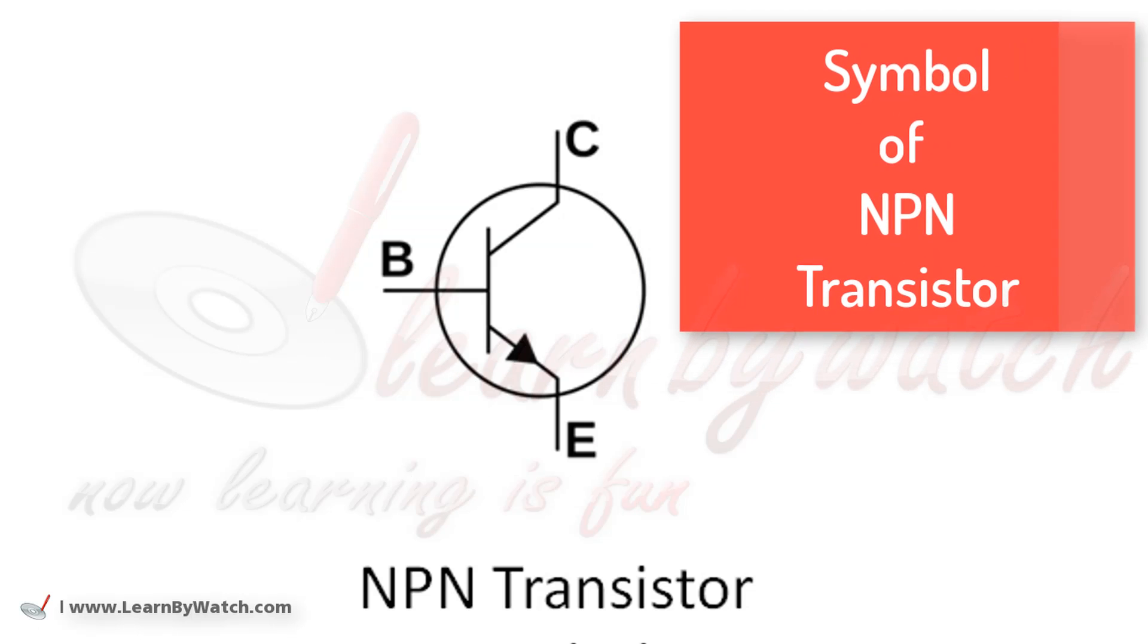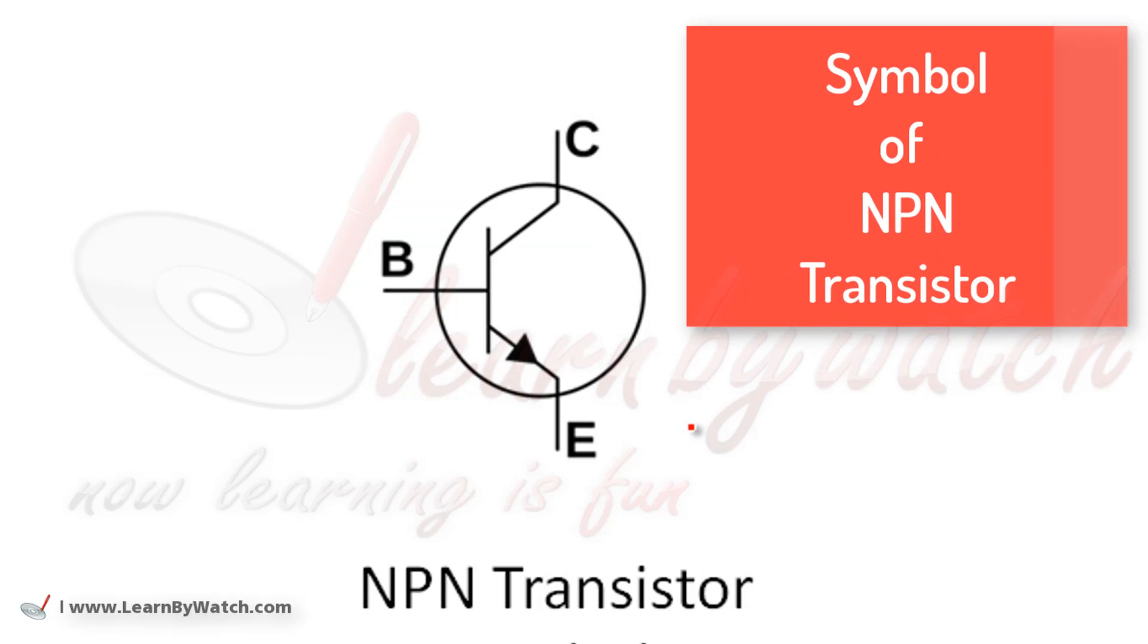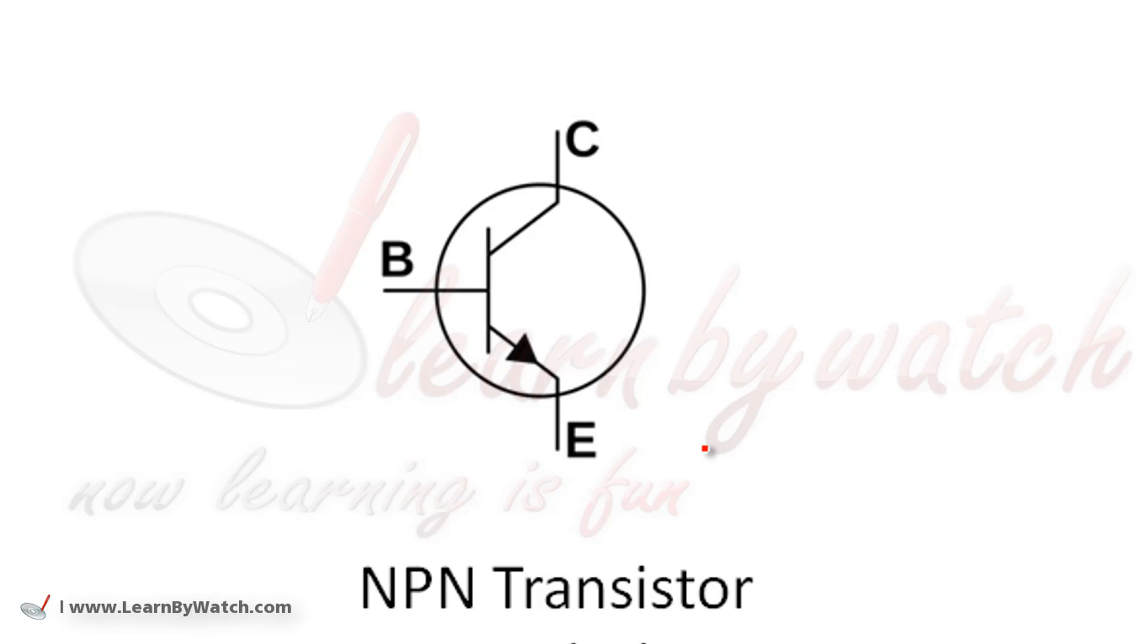This is the symbol of an NPN transistor. There is a PNP transistor too, but we will discuss that in a different video. This is called the collector terminal. This is the base, and this is the emitter.